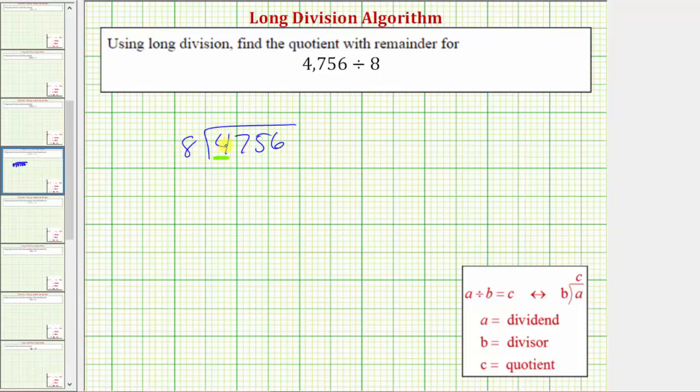In this case, because 4 is less than 8, there are 0 eights in 4, and therefore we also consider the next digit in the dividend, which means we now consider 47.